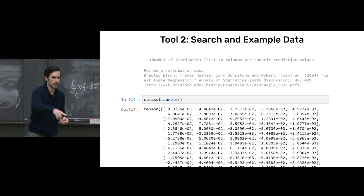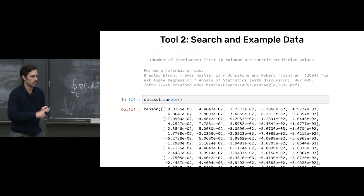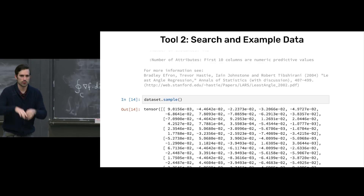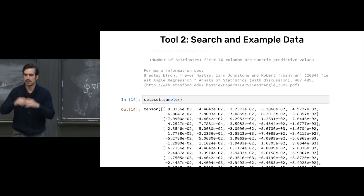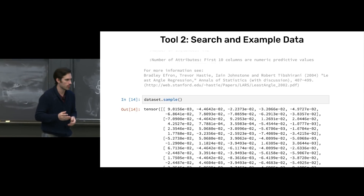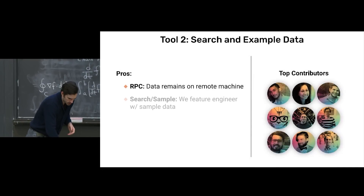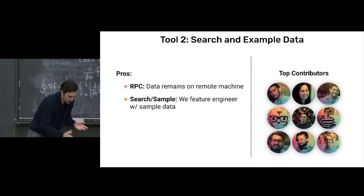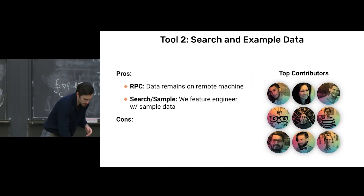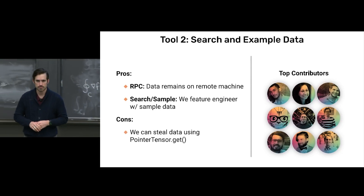So basic remote execution — remote procedure calls — and basic private search, plus the ability to look at sample data, gives us enough general context to start doing things like feature engineering and evaluating quality. The data remains on the remote machine, and we can do some basic feature engineering. Here's where things get a little more complicated.